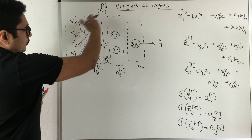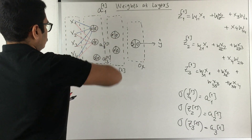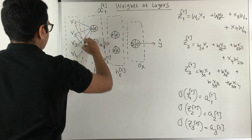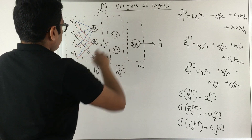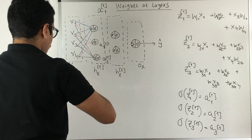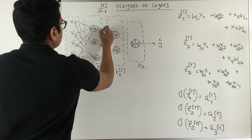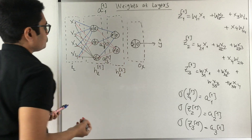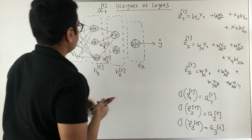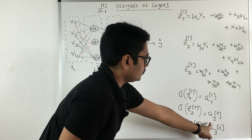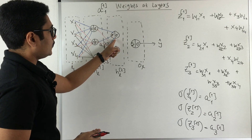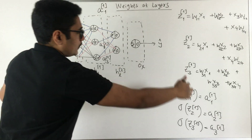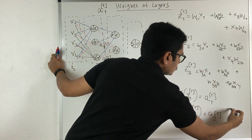Now we move to the second hidden layer. At this layer the neuron receives inputs from all three outputs of the first hidden layer — a1[1], a2[1], a3[1] — with different weights connecting them. So the inputs to any neuron at the second hidden layer are those three values with their corresponding weights.